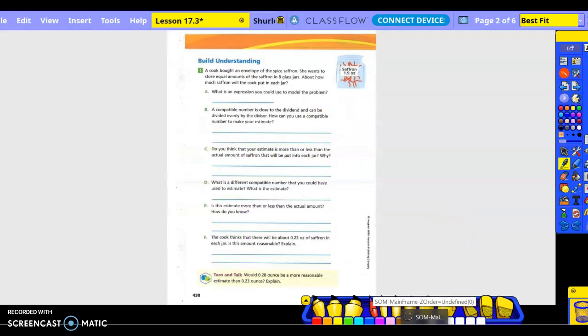A cook bought an envelope of the spice saffron. She wanted to store equal amounts of the saffron in eight glass jars. About how much saffron will the cook put in each jar? What is an expression you can use to model the problem? One point nine or one and nine tenths divided by eight.